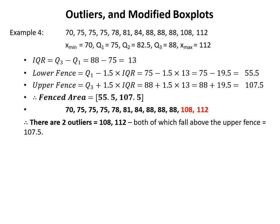Finally, Example 4 has IQR=13, with a lower fence of 55.5 and upper fence of 107.5. There are no lower outliers, but there are two upper outliers: 108 and 112.